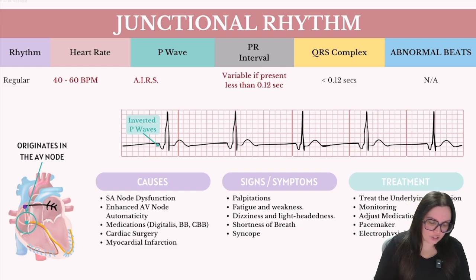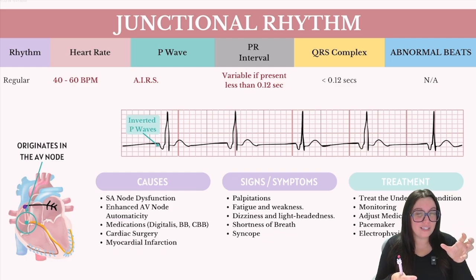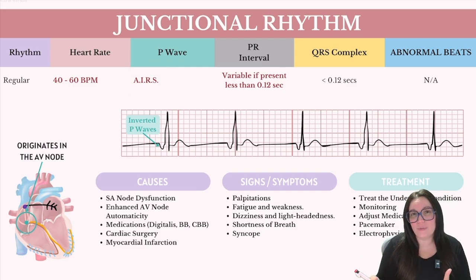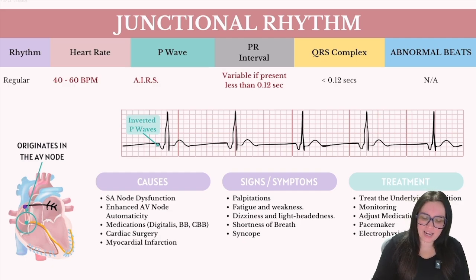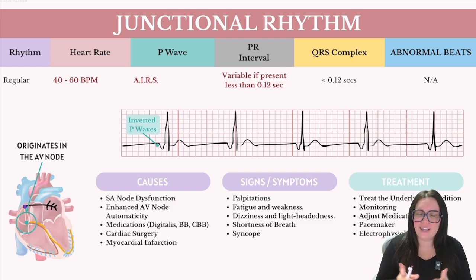So what are we going to see with junctional rhythms? We're going to see a rhythm that is regular and a rate that's a little bit slower — the AV node fires between 40 and 60 beats per minute. P waves are either going to be absent, inverted, retrograde, or short. The PR interval, if present, will be less than 0.12 seconds, or the interval won't exist at all. We're going to see a normal and narrow QRS complex, because remember, if we see a big, wide, and ugly QRS complex, we're most likely looking at something else.